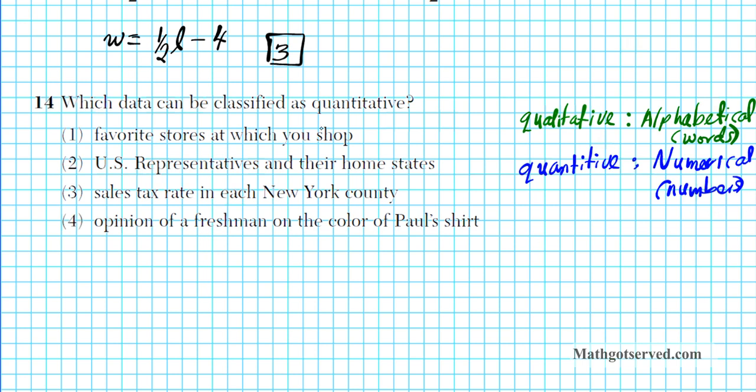So let's go through them. For number 1, the favorite store at which you shop. I like to shop at Target. Target. What is that? Target is a word. So this is qualitative. Option 1 is qualitative. So that's not what we're looking for.